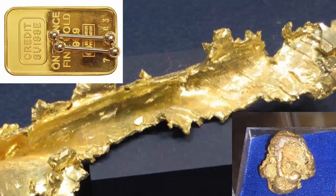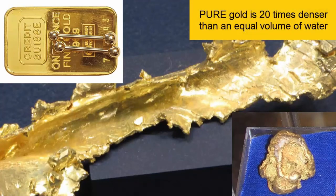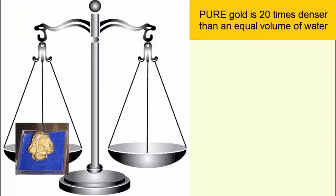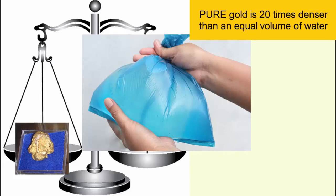So how do we use density to determine the purity of gold? Pure gold has a density 20 times greater than water. So weigh your gold sample and compare it to the weight of 20 times the gold nugget's volume in water. If they aren't the same, the gold isn't pure.